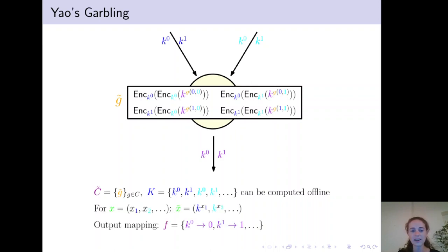For an input X, the garbled input then contains the respective input keys. And finally, there is also an output mapping that allows to map output keys to output bits. So if Bob holds one key for each input wire, this allows him to decrypt exactly one of the four double encryptions and receive exactly one of the two output keys. And then he can use the output mapping to map this key to a bit.